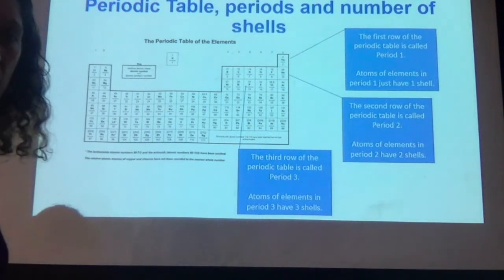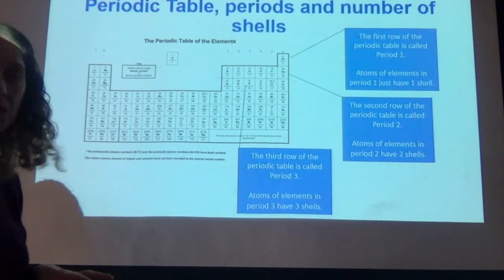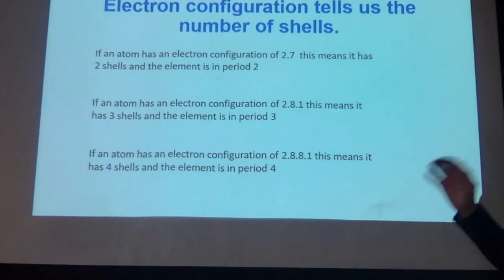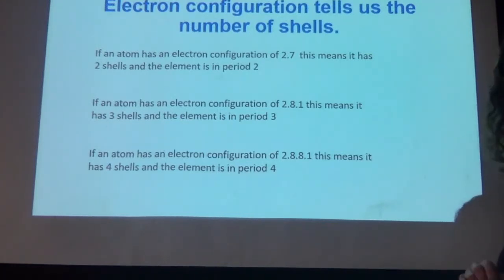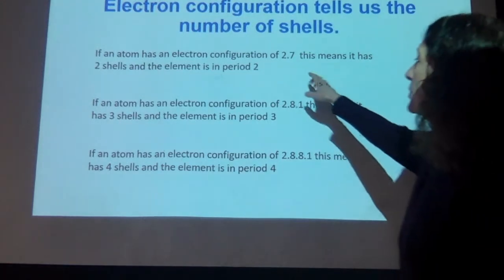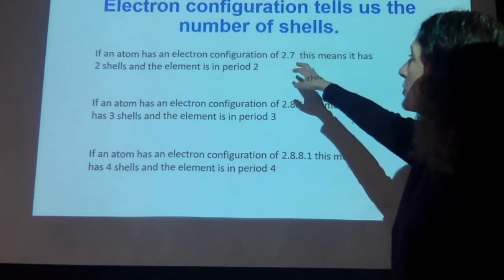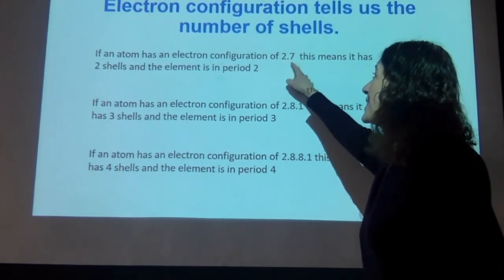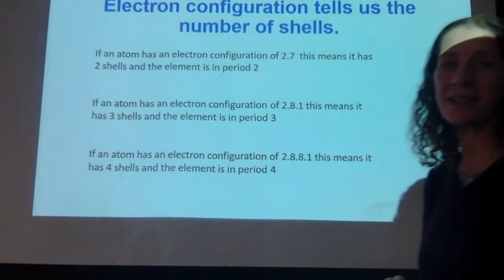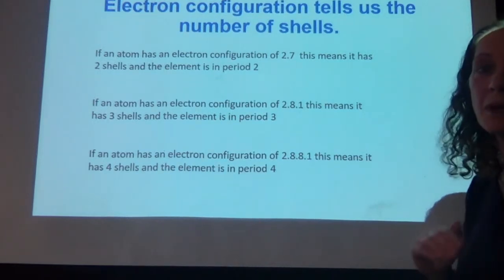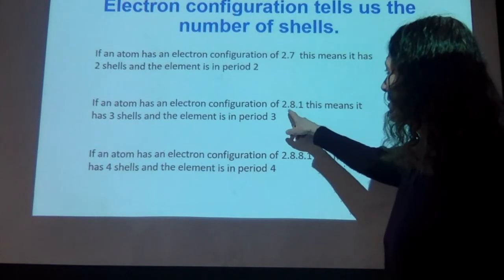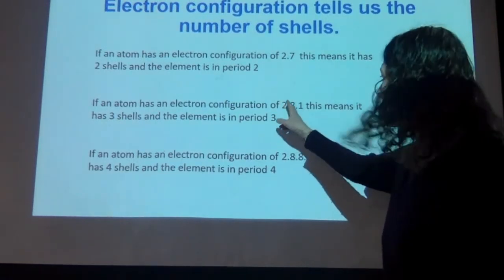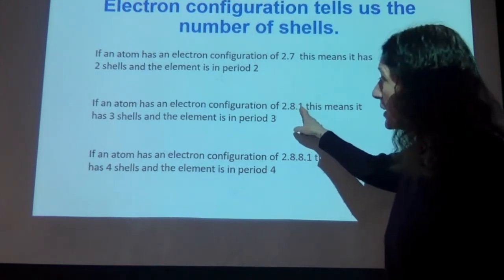Don't forget to make notes on this as we go along — write it down in your exercise book because otherwise it's very difficult to remember afterwards. Now, an element's electron configuration lets us see where it is in the periodic table. For example, if an element has a configuration of 2.7 — two electrons in the first shell, seven in the second — it has two shells and must be in period two. An element with configuration 2.8.1 has three shells and must be in period three.